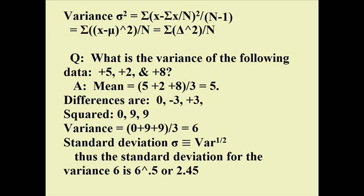Here's a simple example: compute the variance for 5, 2, and 8. First the mean: add them up and divide by 3 to get 5. The differences are 5−5=0, 2−5=−3, and 8−5=+3. Check: differences always add to zero. Square them: 0, 9, 9. Add those up to get 18, divide by 3 to get a variance of 6. The standard deviation is the square root of the variance — the square root of 6, which is 2.45.